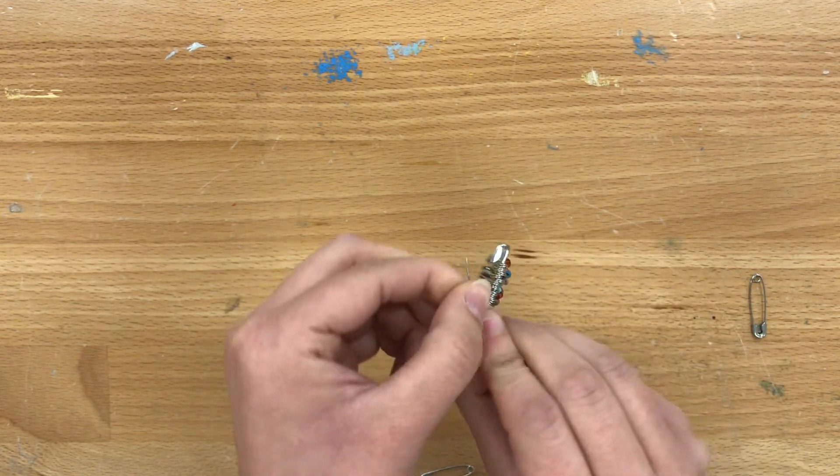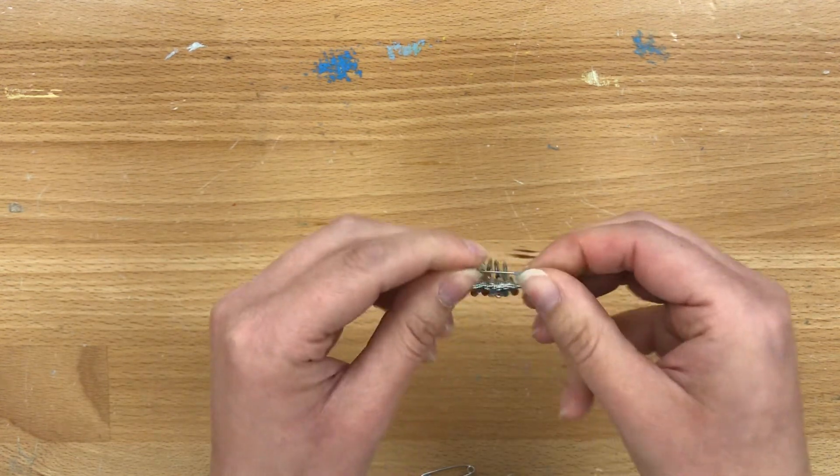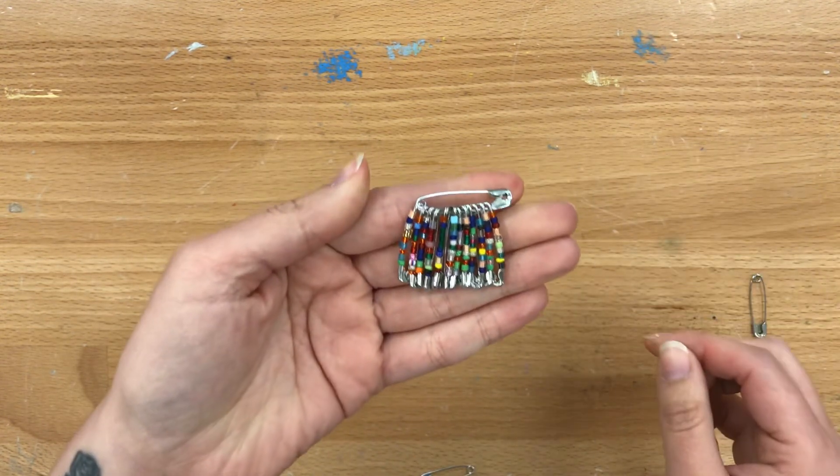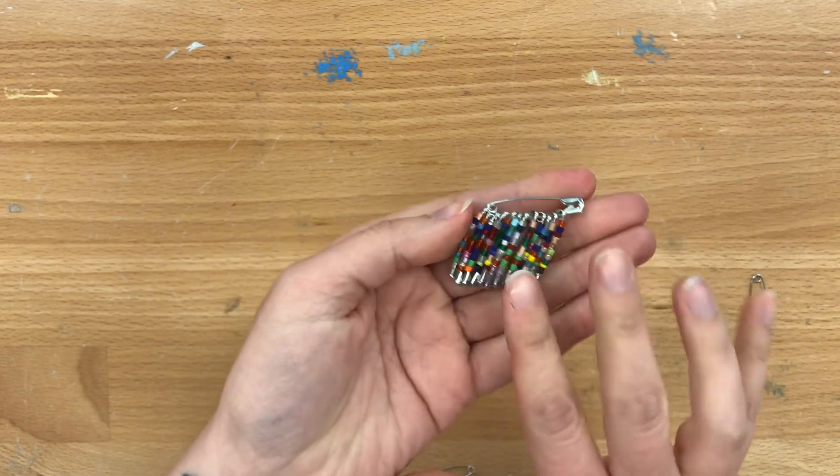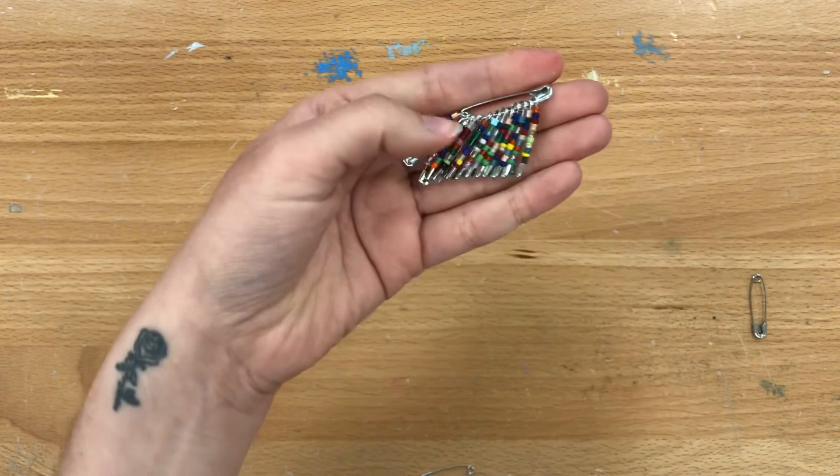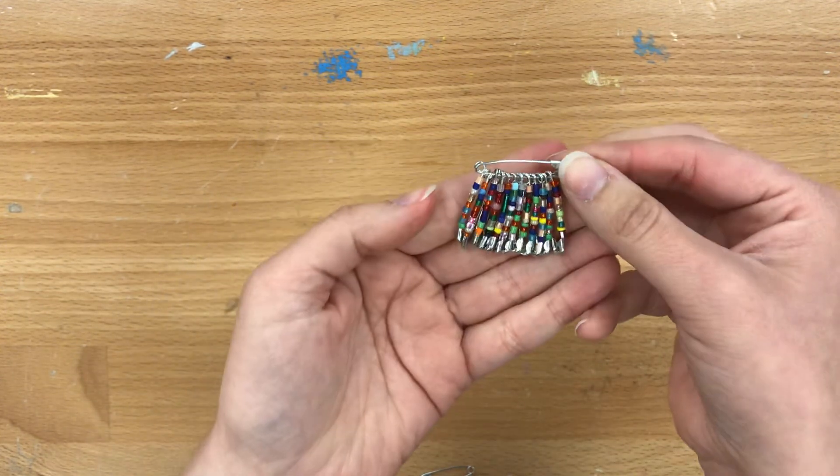And then the final step is just to close your safety pin and now we have a beautiful safety pin brooch and you can wear this and it really livens up an outfit, really makes things bright and colorful so I hope you enjoy it.